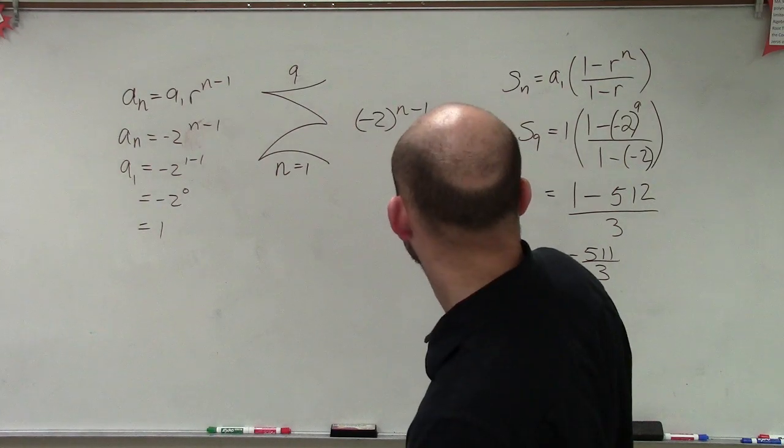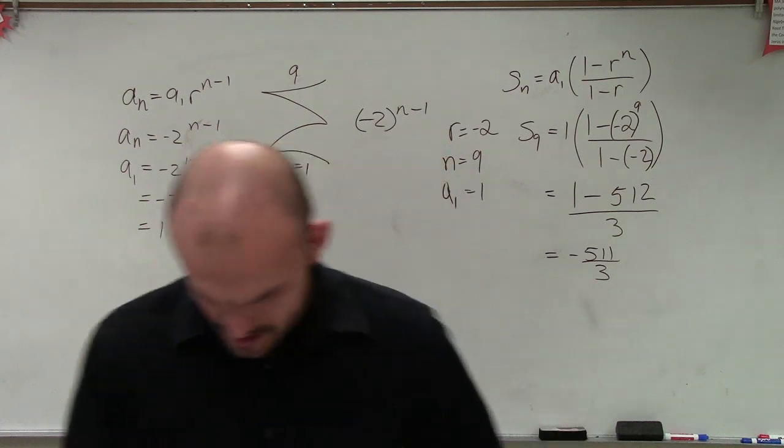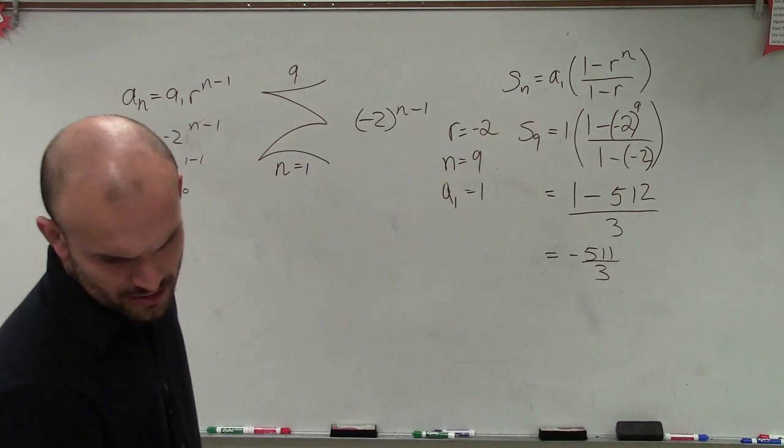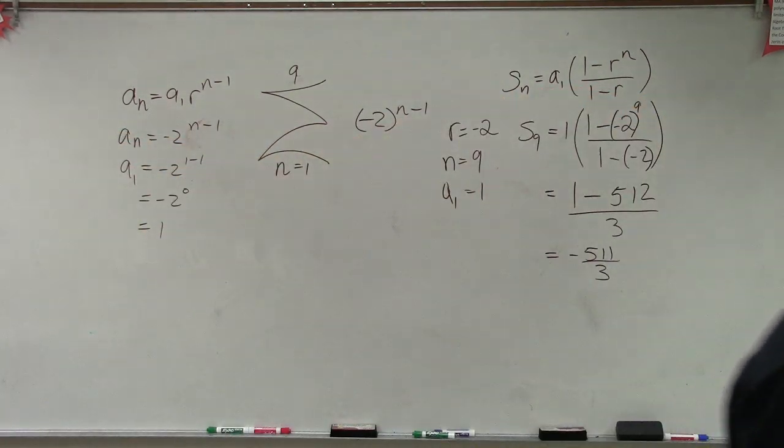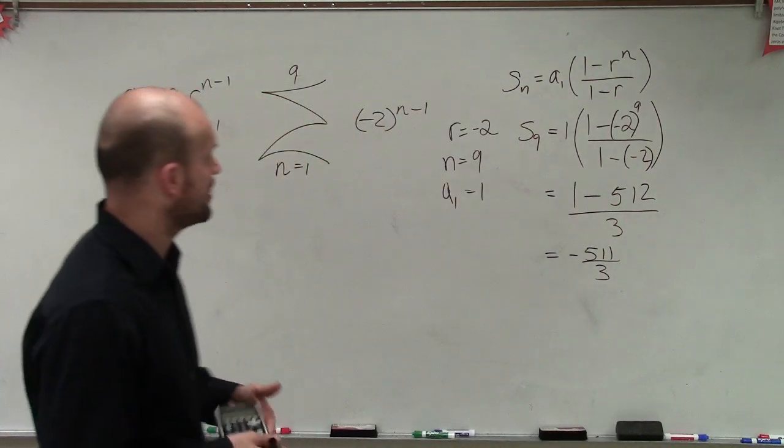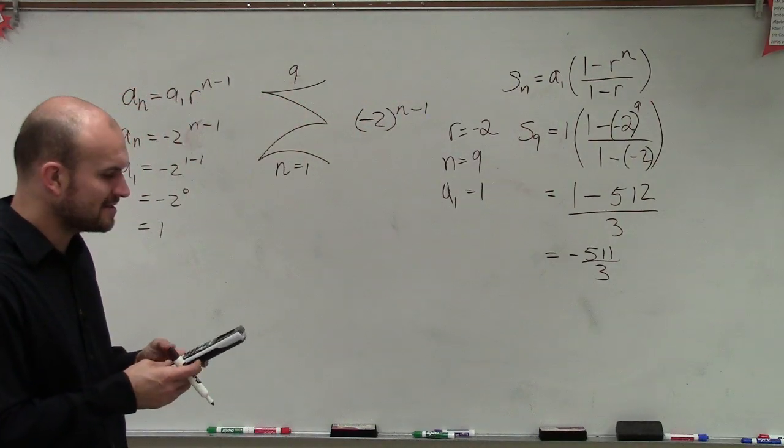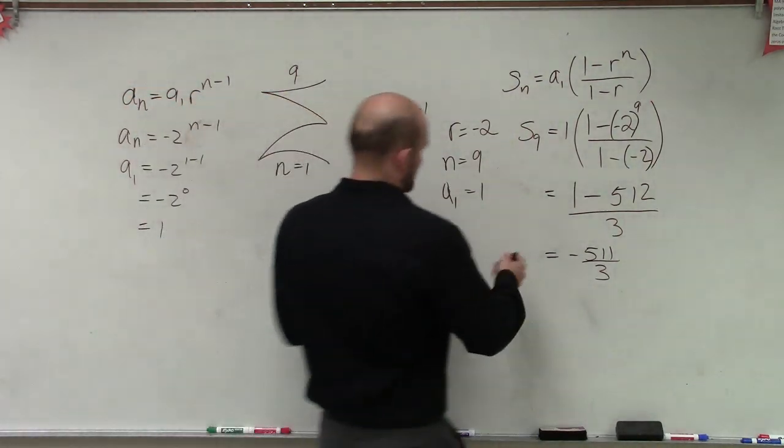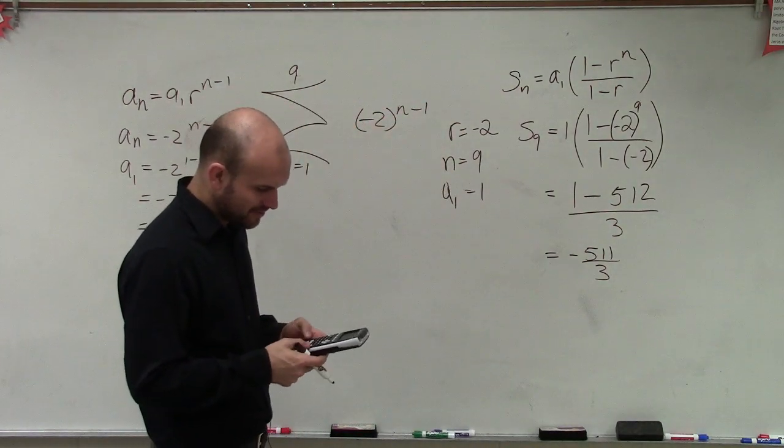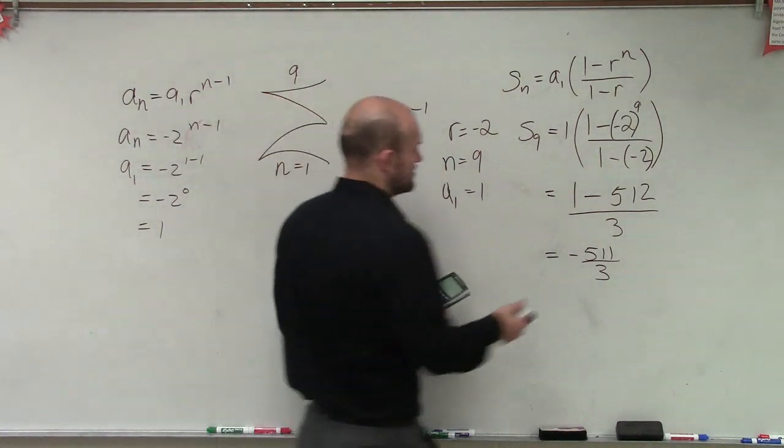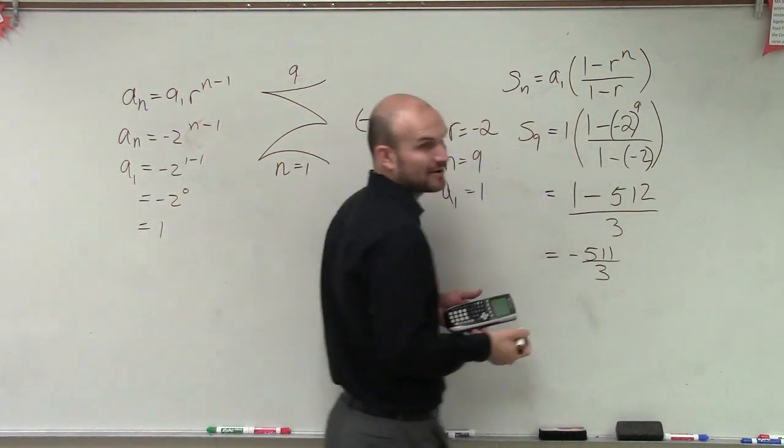What did I do wrong? Did I raise that to the wrong power? I thought it was negative 512. Oh, it's raised to the negative power. You're right. I'm sorry. Negative 2 raised to the 9th. It's an odd power, so that's going to be negative. Thank you. So that should be 513, right?